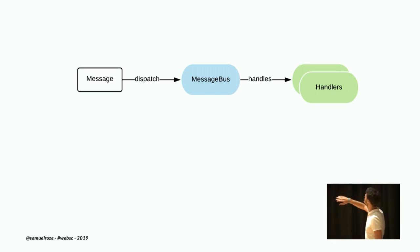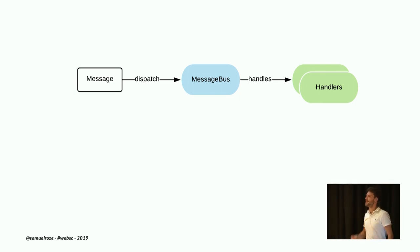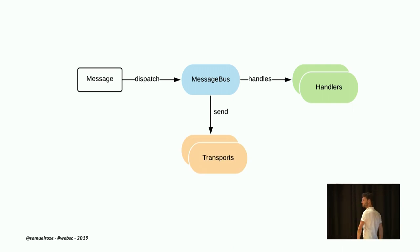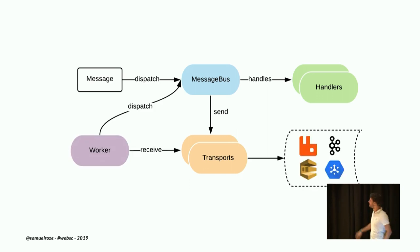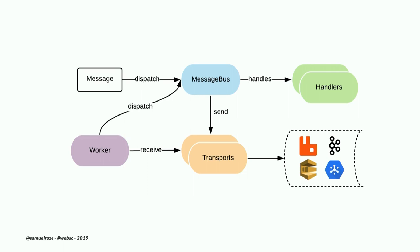As a graph: you have a message, you dispatch it to the message bus, and it will be handled by one or many handlers. Additionally, you can route messages to transports. These transports are responsible for talking to RabbitMQ or anything else — you can create your own. Then there's the worker, running outside of your web server, outside of the HTTP request, which receives messages from the transports and dispatches them back to the bus for the handlers to be called.